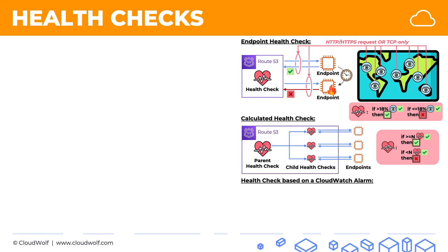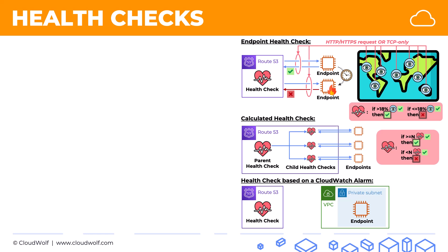The third and most versatile and powerful health check is the health check based on a CloudWatch alarm. One use case: if you've got an endpoint in a private subnet, you can't simply send HTTP or HTTPS requests in there. That's when you set a CloudWatch alarm to monitor the EC2 instance and set up the health check to monitor that CloudWatch alarm. The state of the health check will depend on the state of the alarm. It doesn't have to be used only with private subnet endpoints — it can be used with any kind of endpoint and gives you more versatility than other health checks.